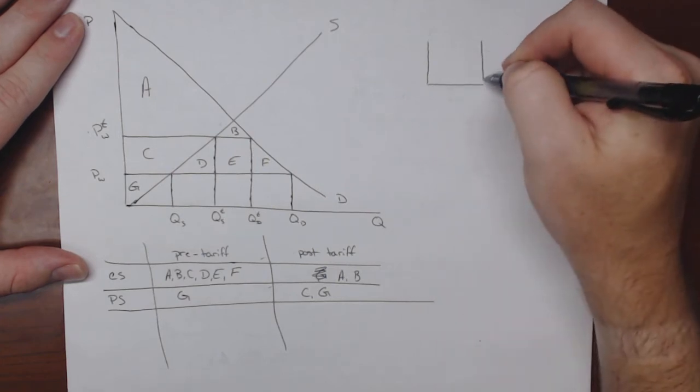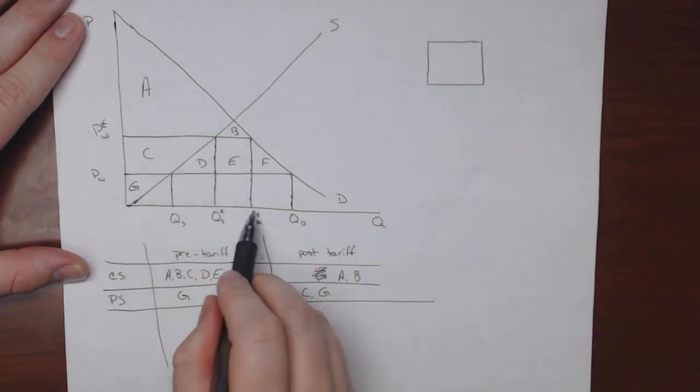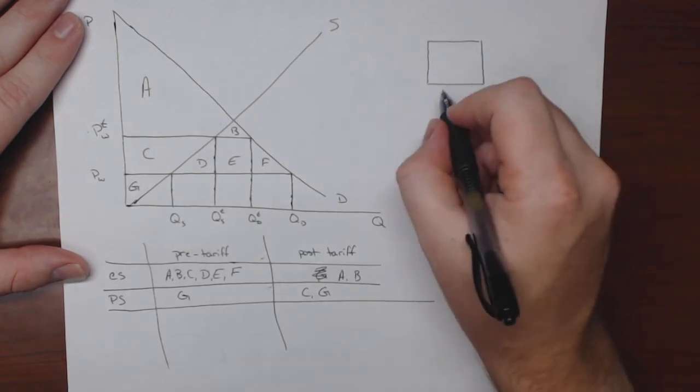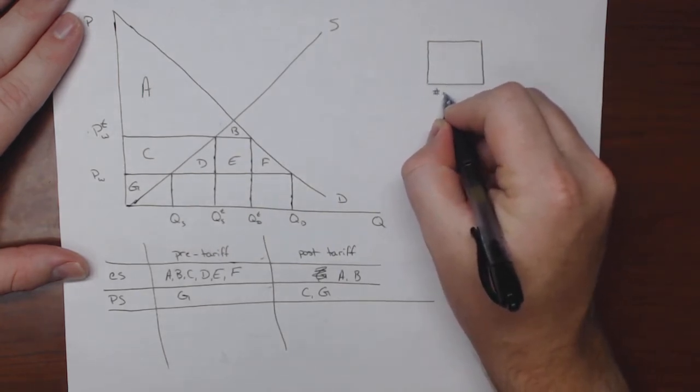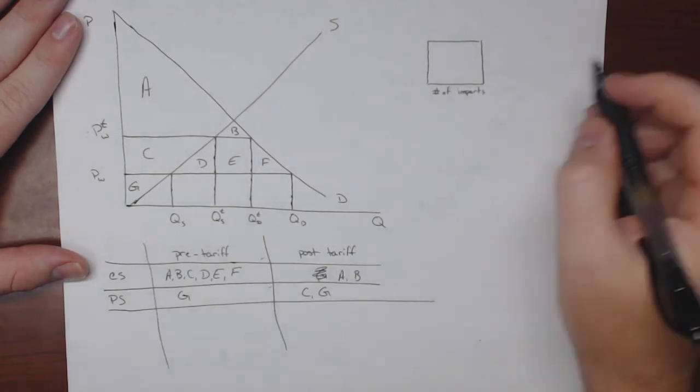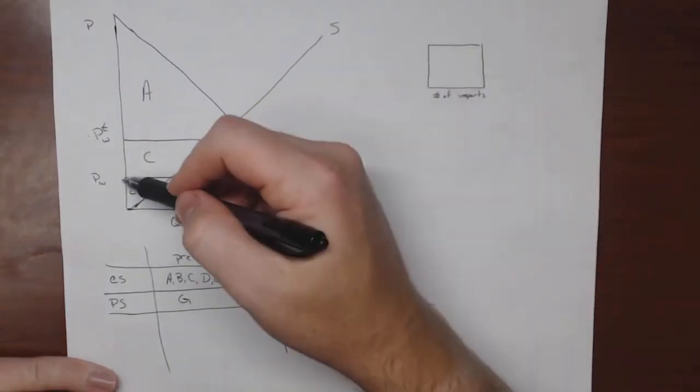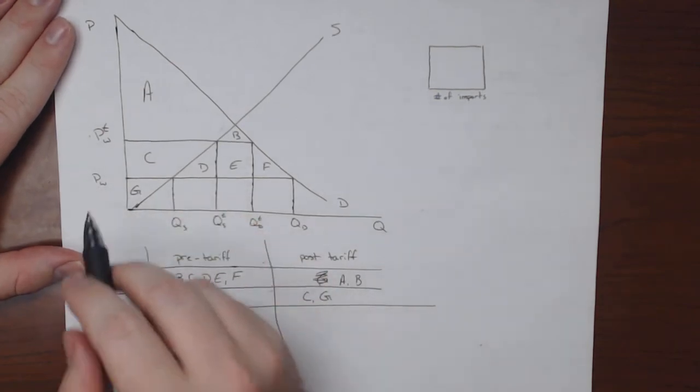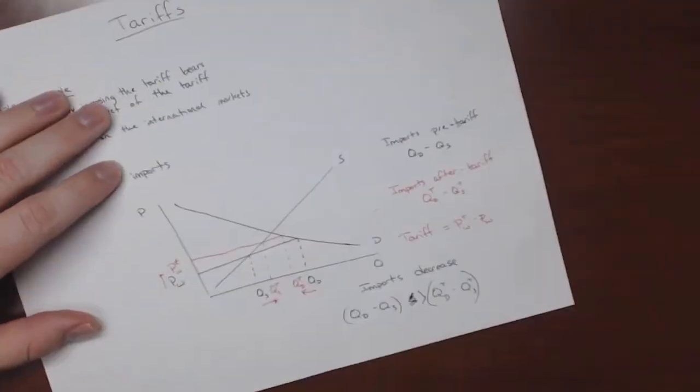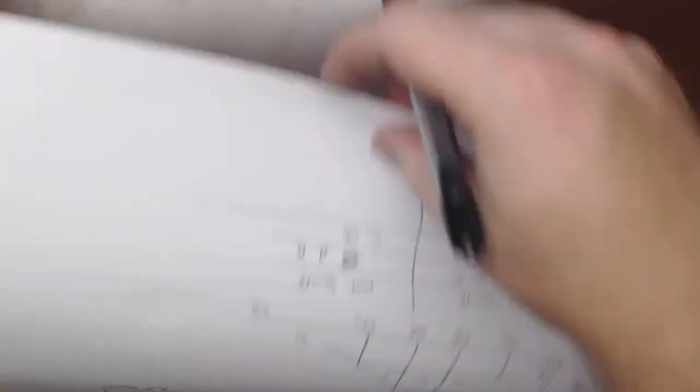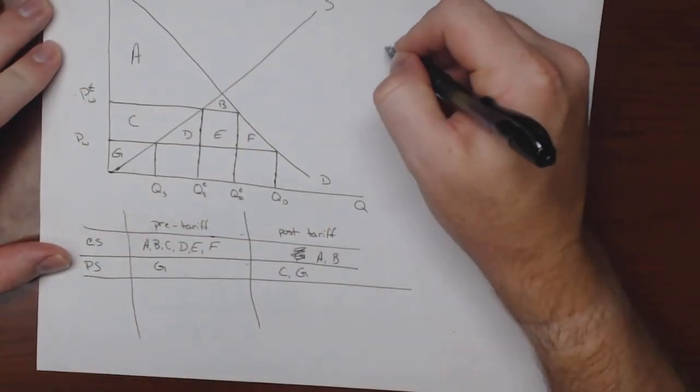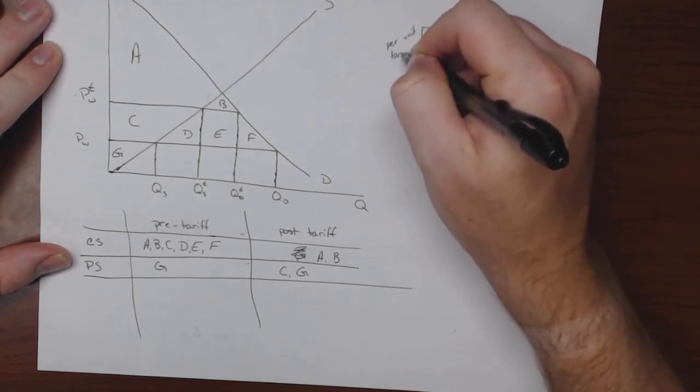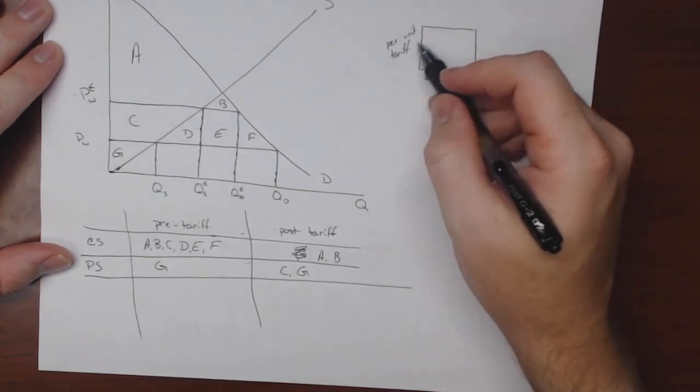And on the x-axis or the q-axis here, well if you think about it, it's the number of imports. So what we have are the number of imports. So that's the width of this box. And on the y, or the height, we have the tariff. So remember, PwT minus Pw is equal to the tariff. That was just right here. So the height of the box is equal to the tariff, the per unit tariff. So if I were to find the area of this, this would be the tariff revenue.